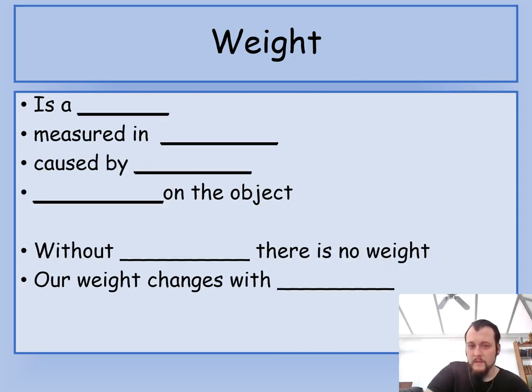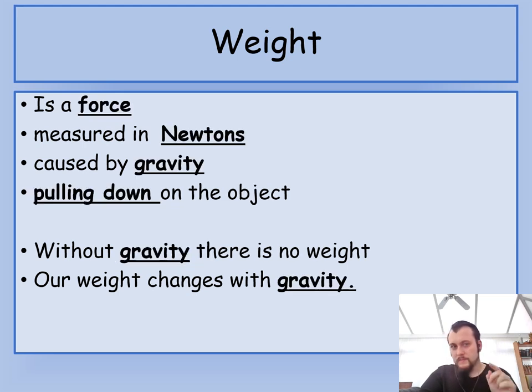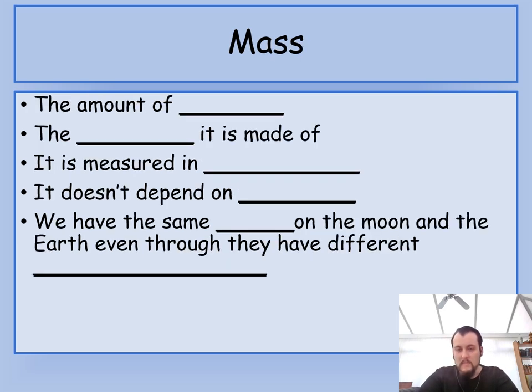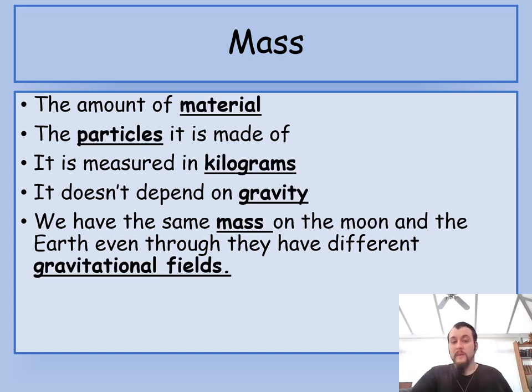So now what I want you to do is try and fill these in. So pause it. You have five seconds to pause. So in five, four, three, two, one, I'm moving on to the answer. Weight is a force, measured in Newton, caused by gravity. It's pulling down towards the center of an object. Without gravity, there is no weight. Our weight changes with gravity. Mass. The amount of material, the particles it's made of, measured in kilograms, doesn't depend on gravity. We have the same mass on the moon and the earth, even though they have different gravitational fields.